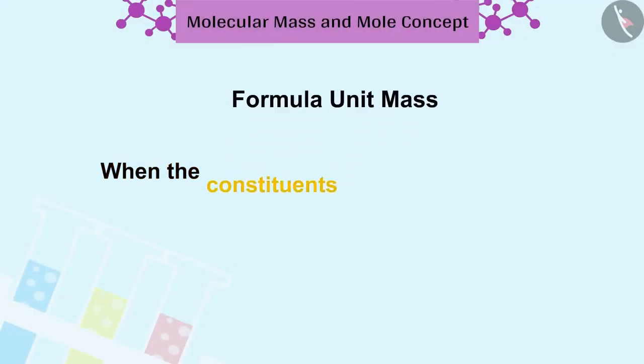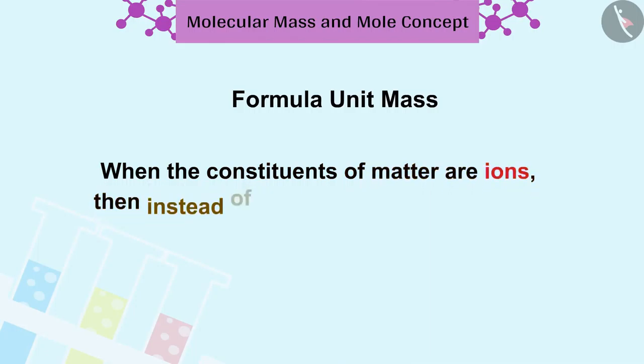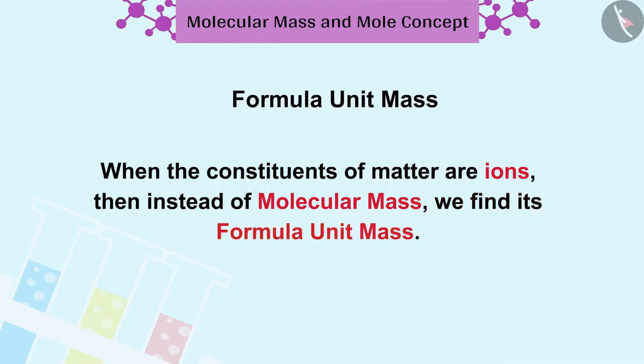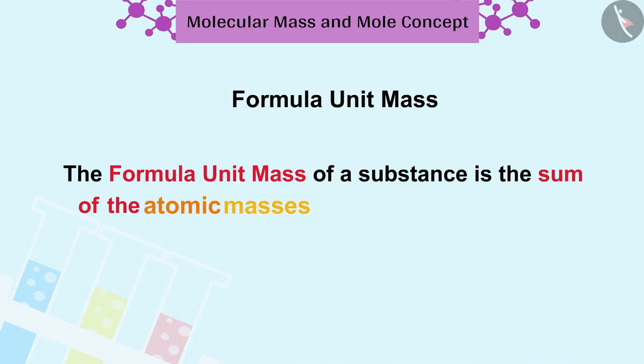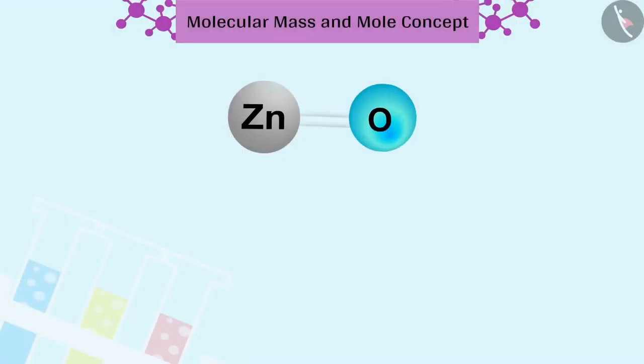When the constituents of matter are ions, then instead of molecular mass, we find its formula unit mass. The formula unit mass of a substance is the sum of the atomic masses of all its constituent ions.